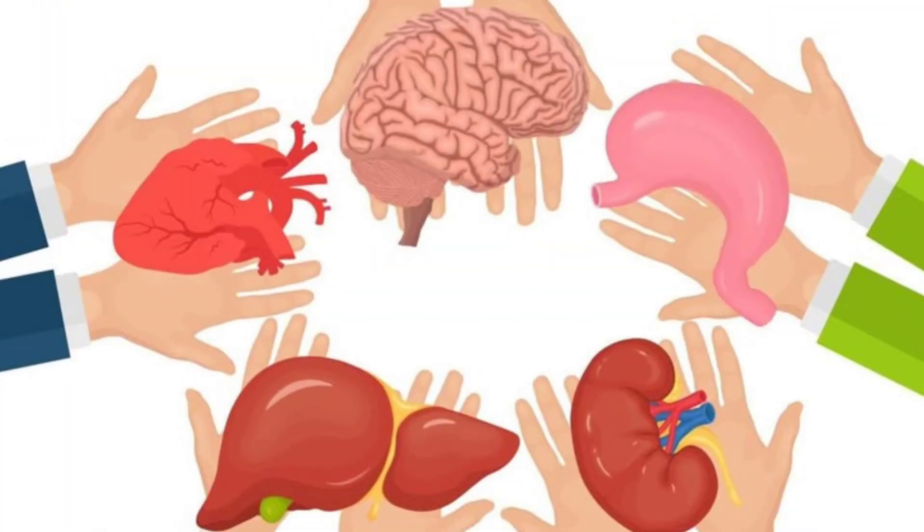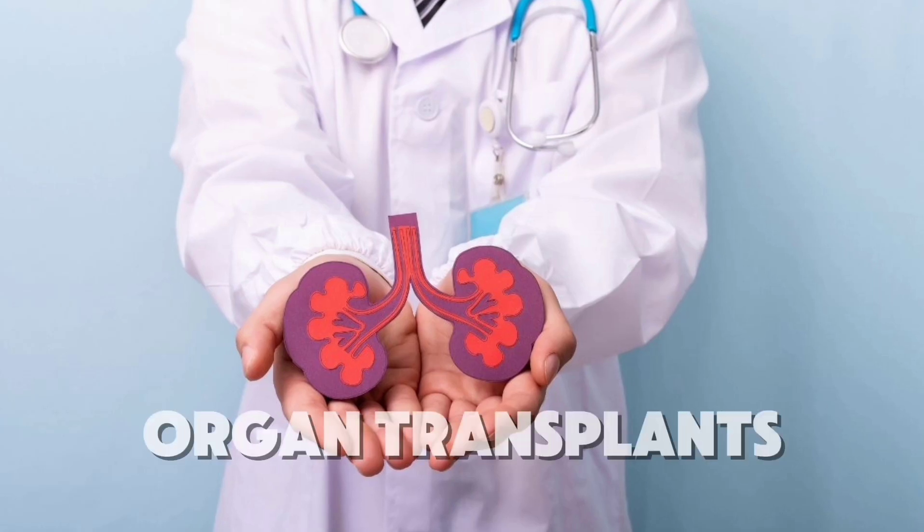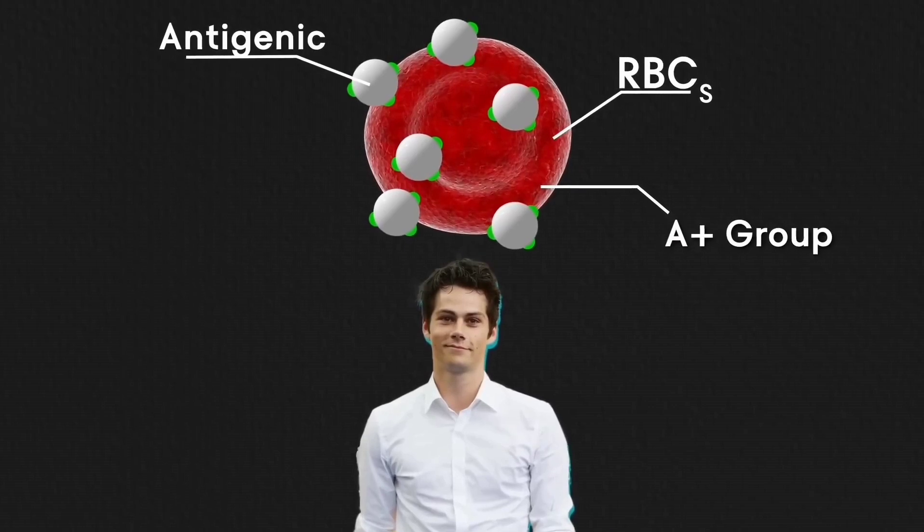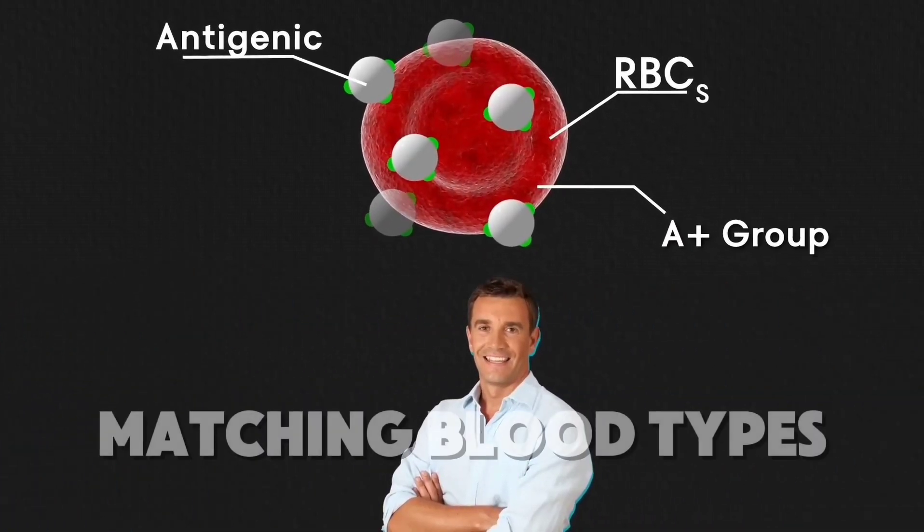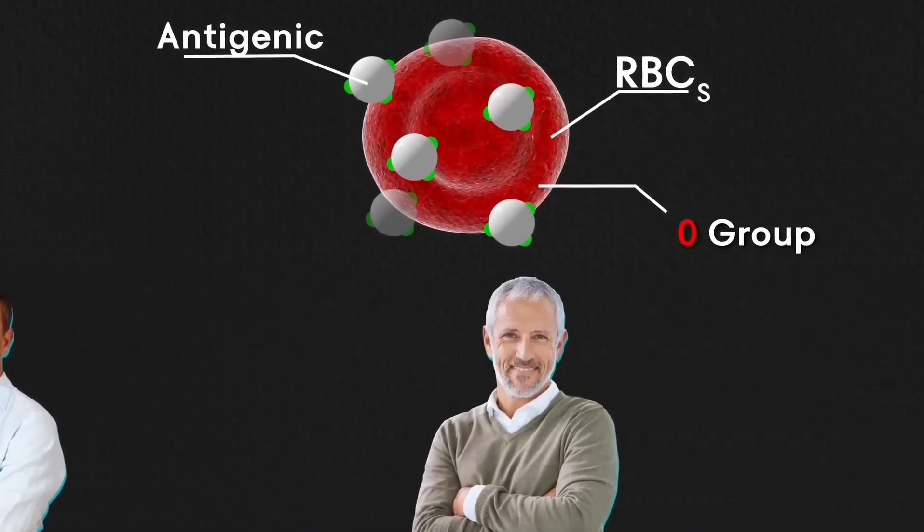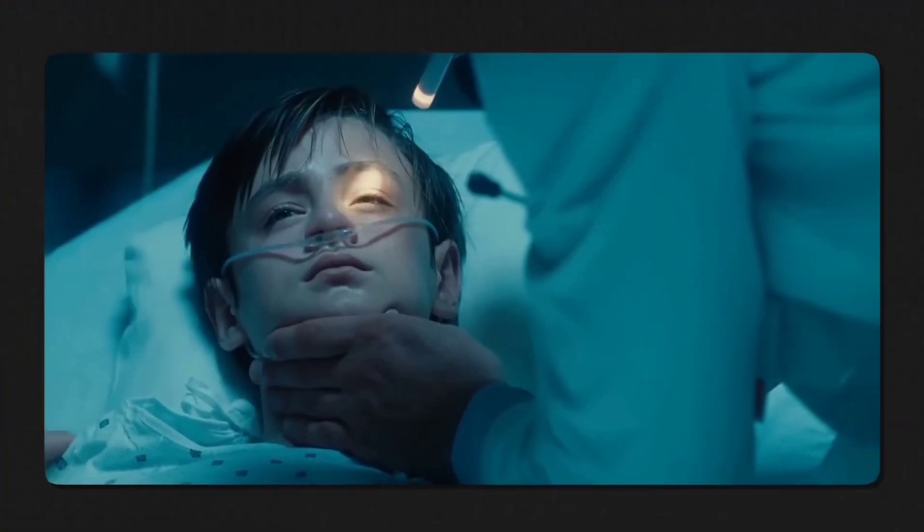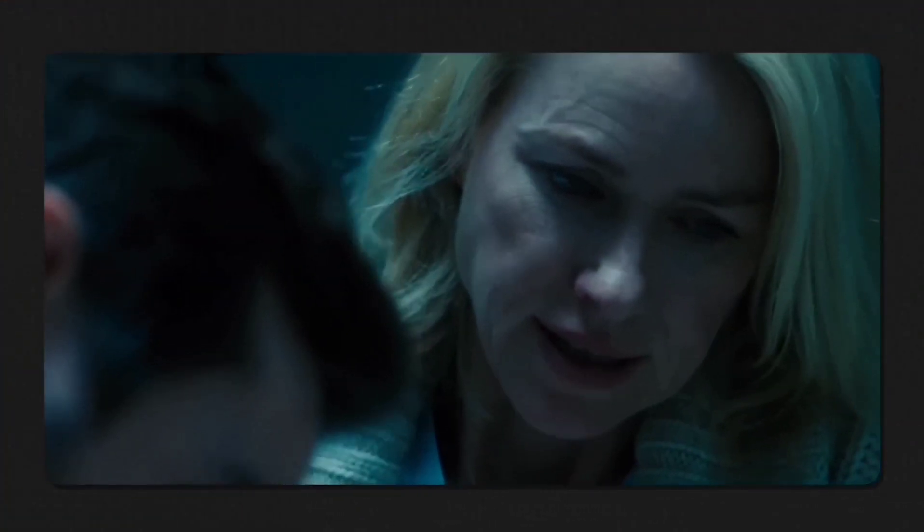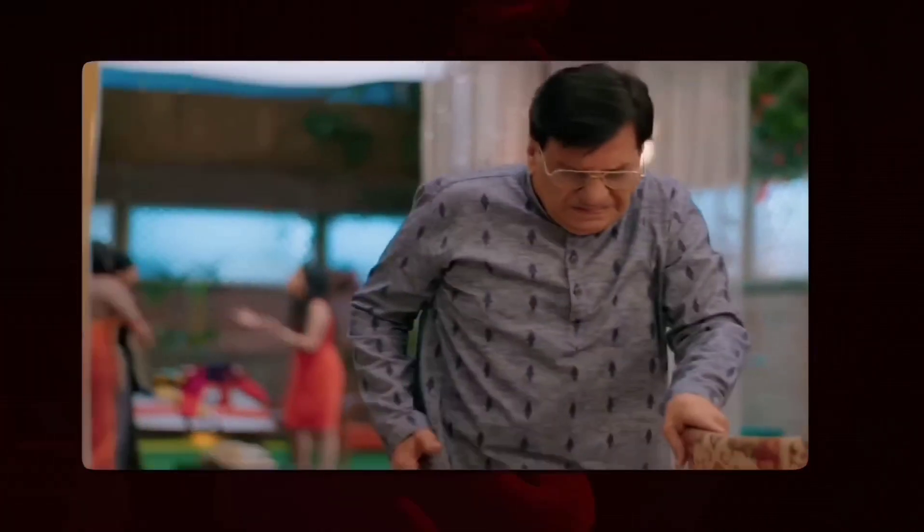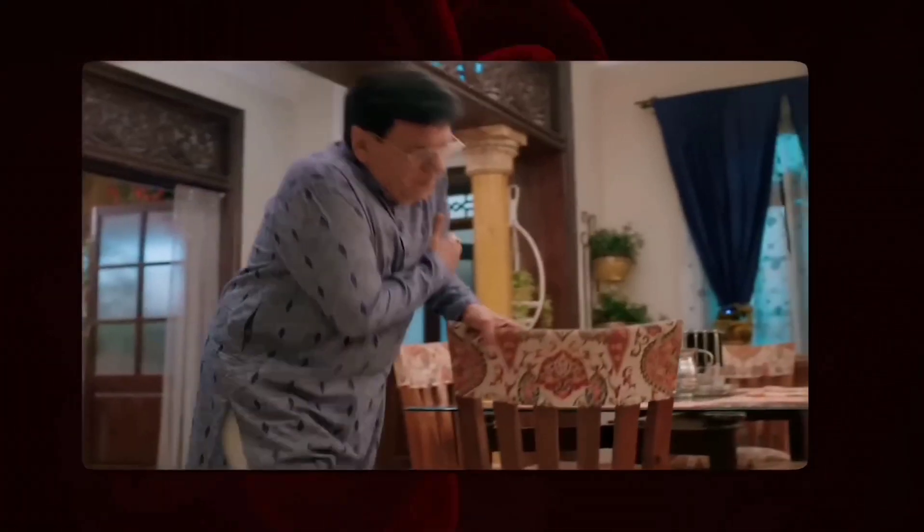Fact 25. In organ donation, AB blood types have more options. Organ transplants require close blood type matching. People with AB blood are lucky in this area. They can receive organs from donors with type A, B, AB, or O blood, as long as other matches line up. This flexibility means AB patients may wait less time for certain organs. It's one of the few advantages of being rare.